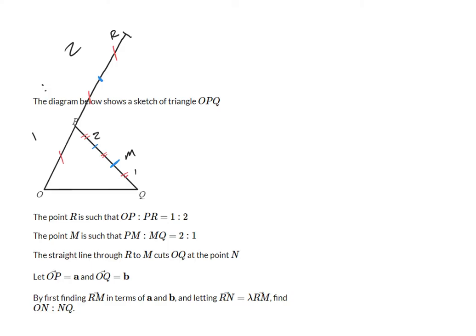Now, it also tells us that a straight line from R through M cuts OQ down here at point N. So we've got R, M, and we cut here at point N. So there's a lot of lines going on. Let's do this one in green. So this line comes all the way down here, and it cuts at N.